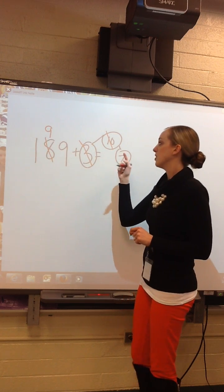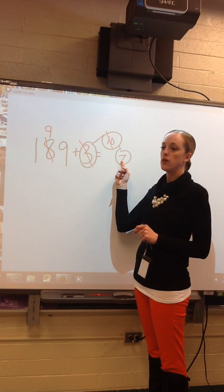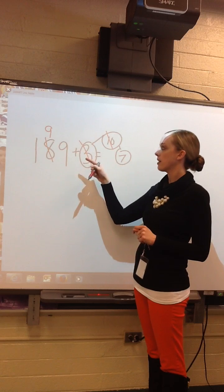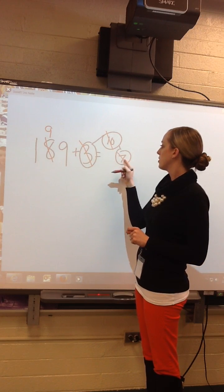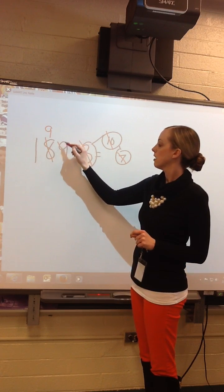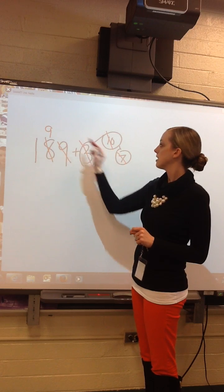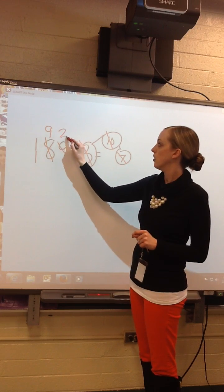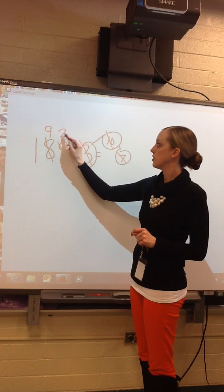Go ahead and add your 10. Now I added too many — 7 too many. So now I have to subtract them. I'm going to subtract those 7 ones: 9 minus 7 is 2. My sum is 192.